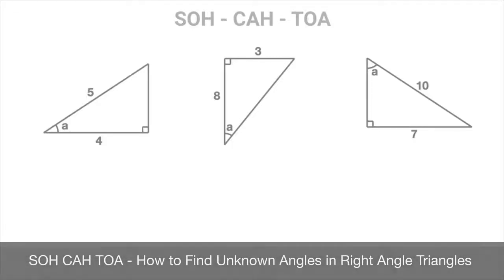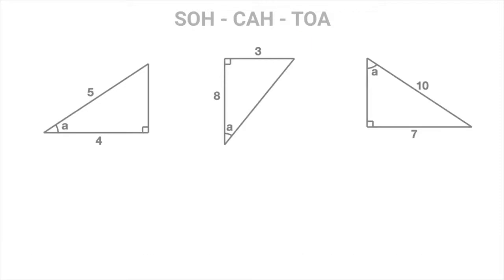We now learn how to find unknown angles inside right-angled triangles using SOHCAHTOA. To do that, we're going to work through three examples. In each of these examples, we'll find the unknown angle marked with the letter A. So let's get started.